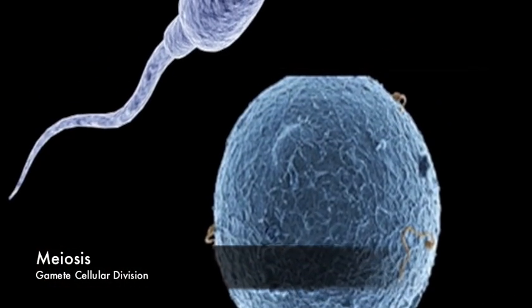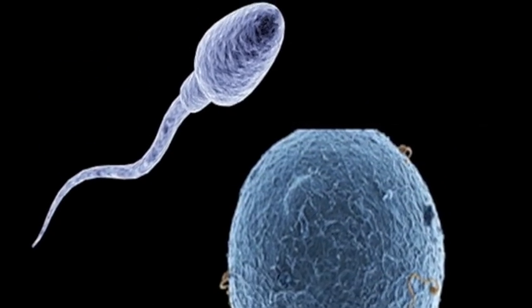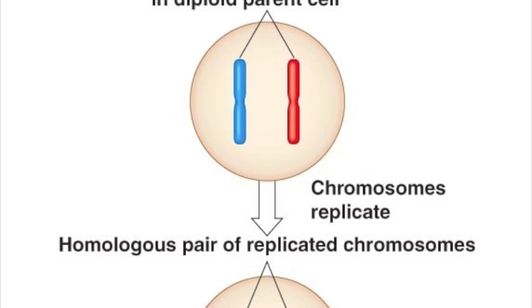While all somatic cells in living organisms undergo mitosis, another process is used for cells called gametes or cells for reproduction. This altered process is called meiosis. Let us take a look at meiosis and see how this is possible.